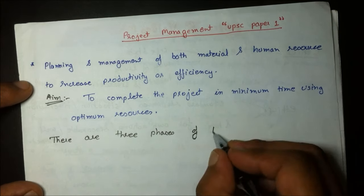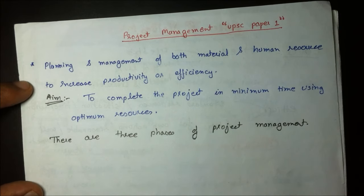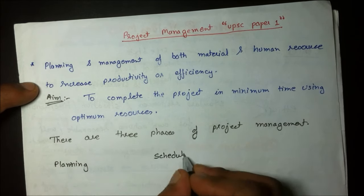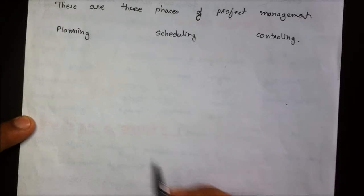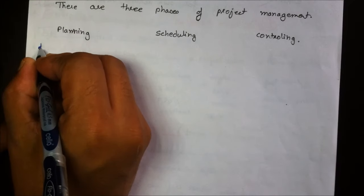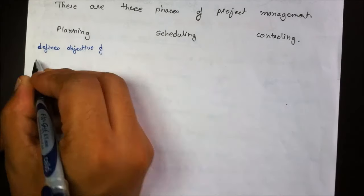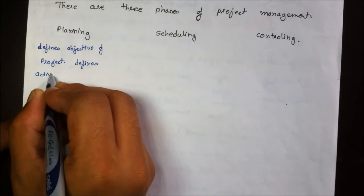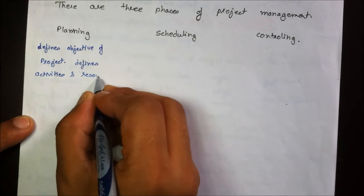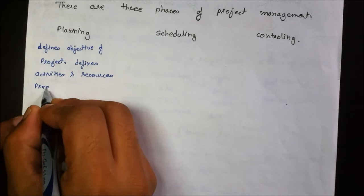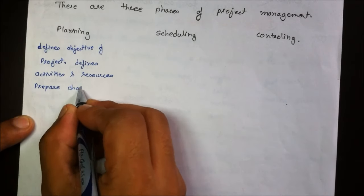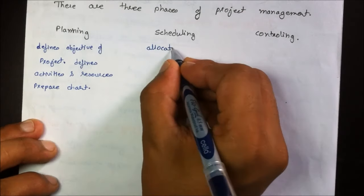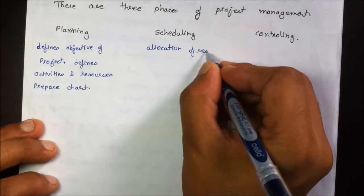Generally there are three parts of project management: planning, scheduling, and controlling. Planning involves defining the objective of the project, defining activities, determining resources required, and preparing a chart for the computation of cost for each activity.